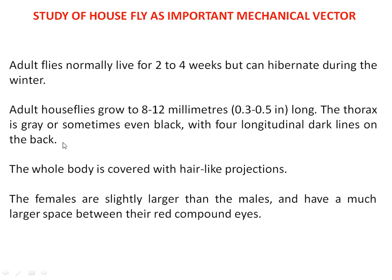The thorax is grayish in color, sometimes even black, with four longitudinal dark lines on the backside. The whole body is covered with hair-like projections. Sensory hairs are present. The females are slightly larger than males and have a much larger space between their red compound eyes. These are the distinguishing features, and sexual dimorphism is also present in the housefly.